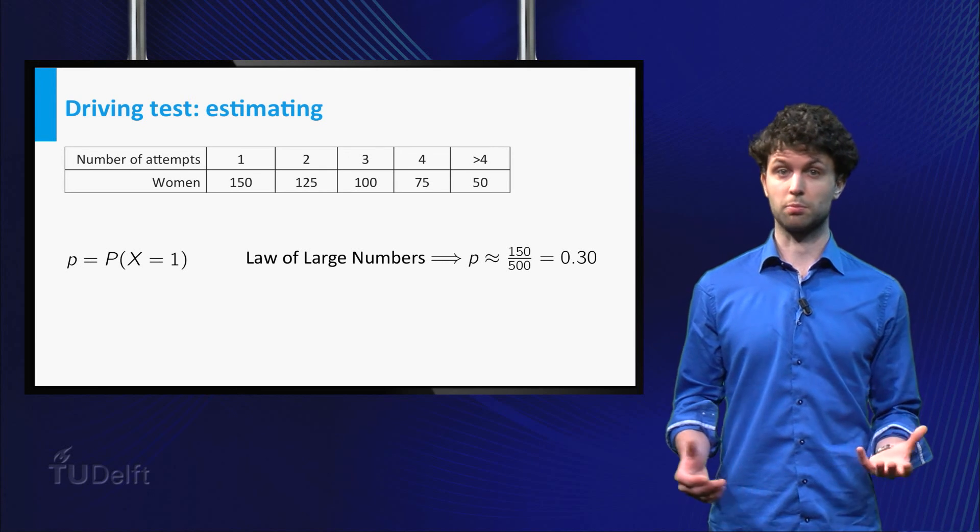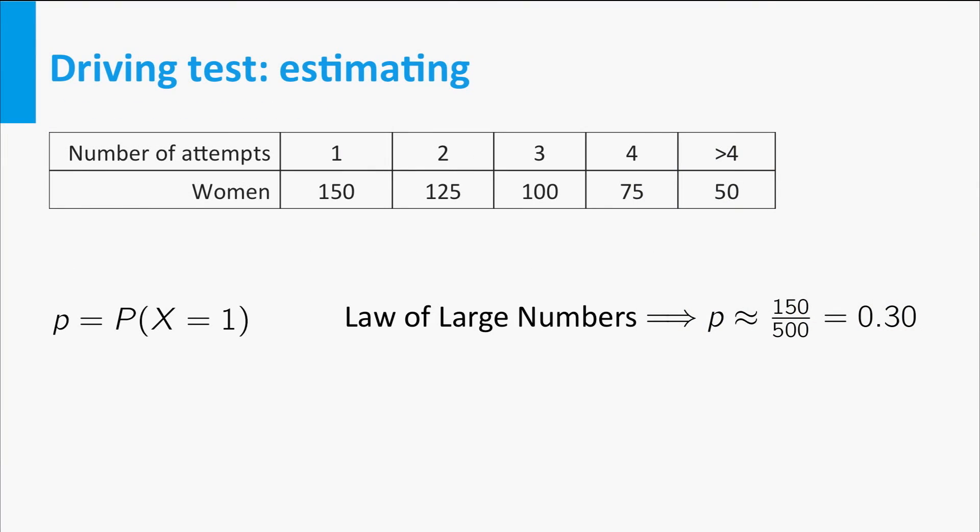Well, P is just the probability that X equals 1. So by the law of large numbers, we could estimate P by the number of women that passed directly with their first test, divided by the total number of women. For the given data, this equals 0.30.